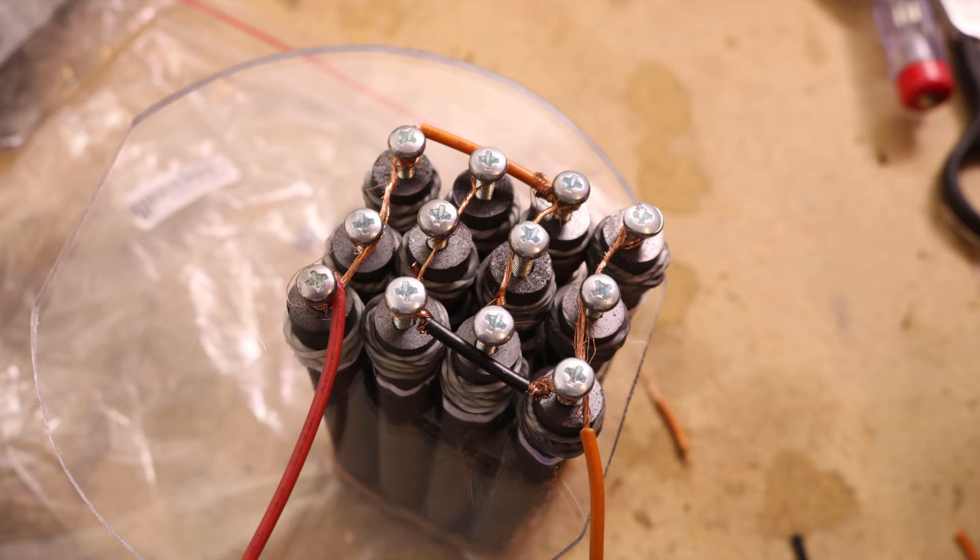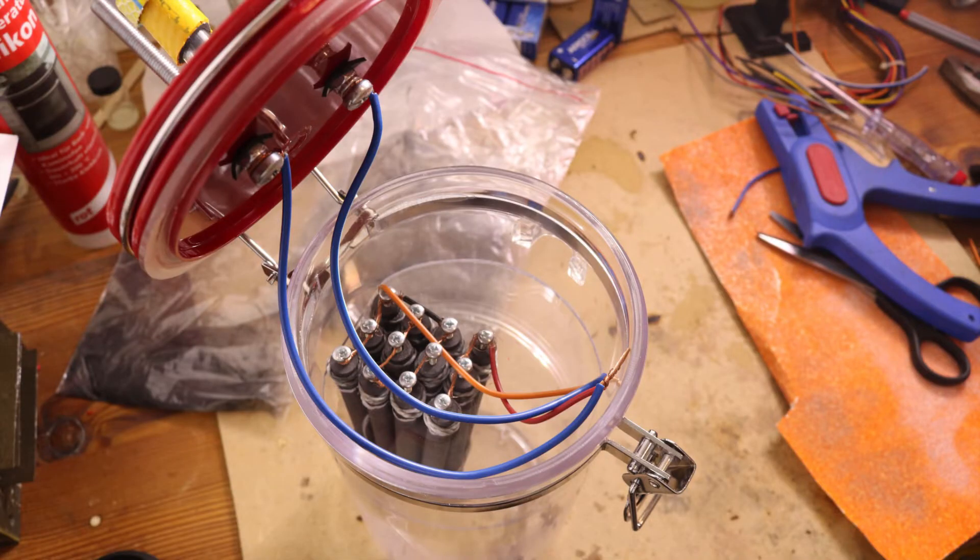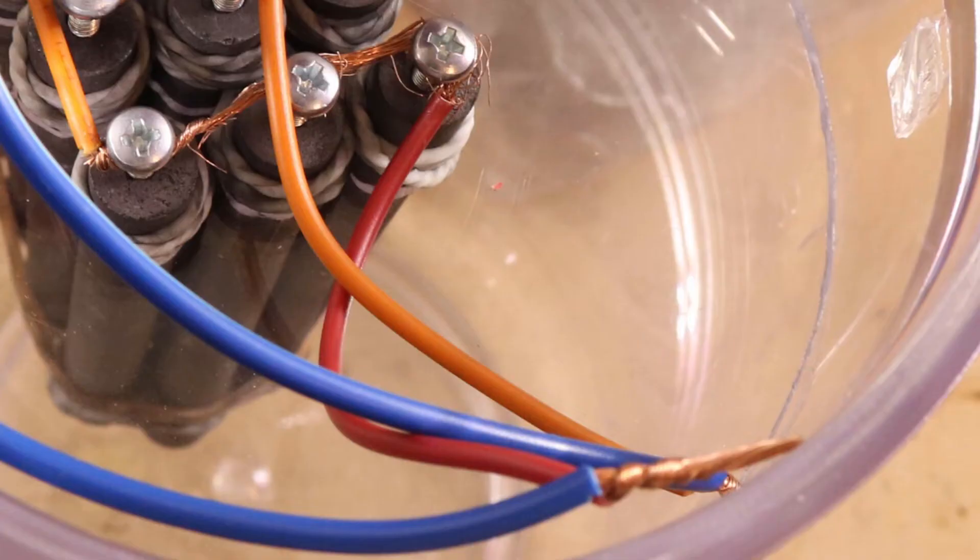I wired them up so each row of 4 electrodes has another polarity next to them. So that plus and minus is always closest to each other. I then put everything in the container and connected the electrodes to the screws in the lid.